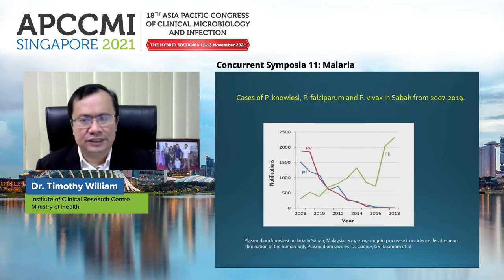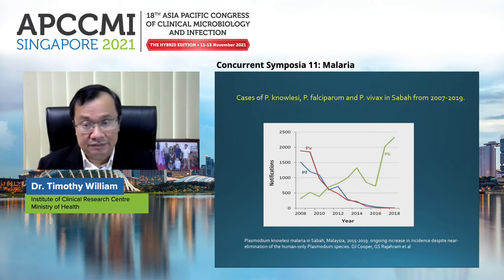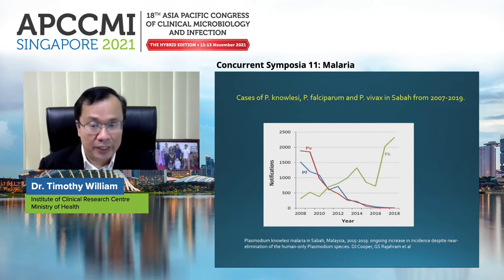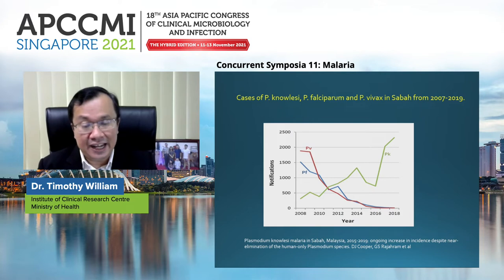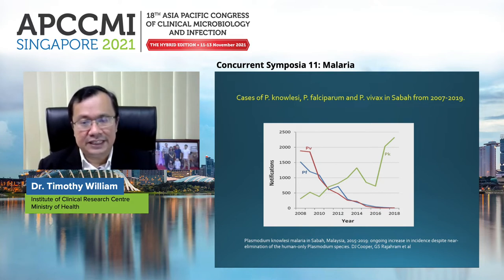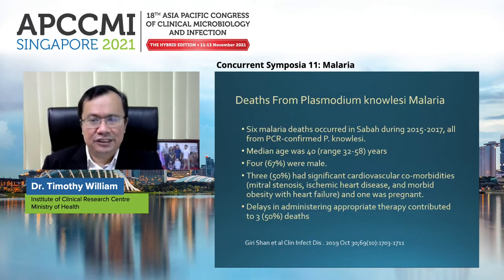These are the cases of Plasmodium knowlesi, falciparum, and vivax as seen in Sabah from 2007 to 2019, which is generally the same as in the whole of Malaysia. As you can see, P. vivax and P. falciparum have gradually come down very well — our country is heading toward malaria elimination with these two species. However, if you look at the green graph, P. knowlesi has been increasing from 2008 through 2017 and 2018, with rising numbers. It is a major problem in Malaysia.